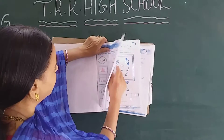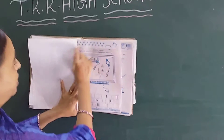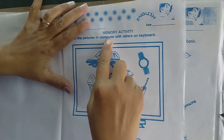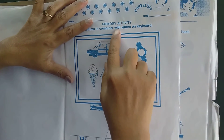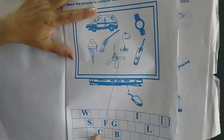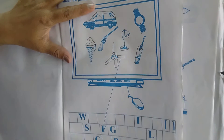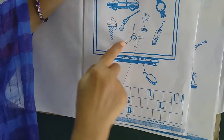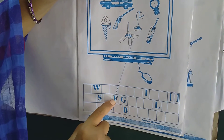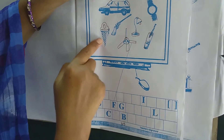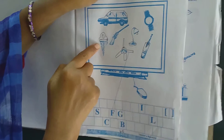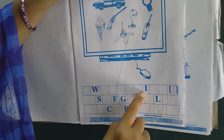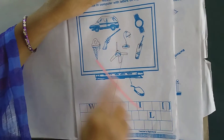Turn the page. Look at here — this page also we have to do today. Now, match the picture. He has given a computer picture with letters on the keyboard. We have to match these pictures to their related letters. One is done for us — which picture is this? Fan. He has matched it with the letter F. Now, which picture is this? Ice cream. I for ice cream — find the letter I and draw a line.